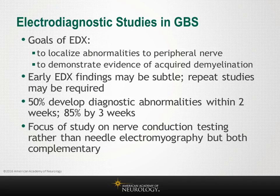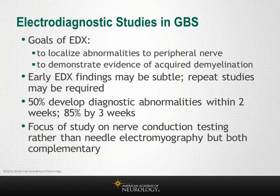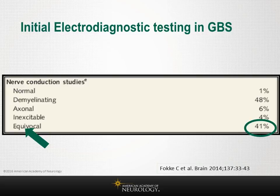The goals of electrodiagnostic testing in Guillain-Barré are to localize abnormalities to the peripheral nerve and demonstrate evidence of acquired demyelination. Early electrodiagnostic findings may be subtle and repeat studies may be required. The focus is on nerve conduction testing, though needle EMG is complementary. In the first week of illness, approximately 48 percent of patients had demyelinating features on nerve conduction studies, but 41 percent had equivocal findings.